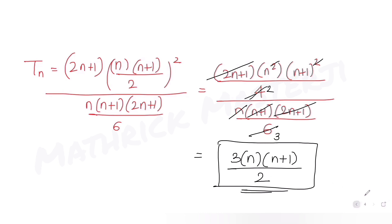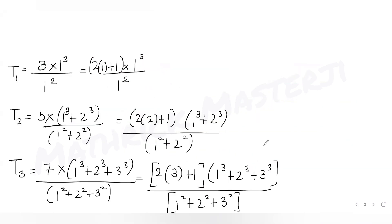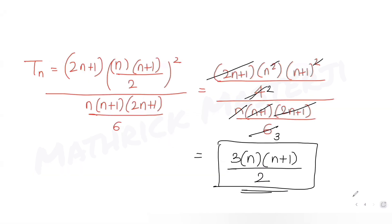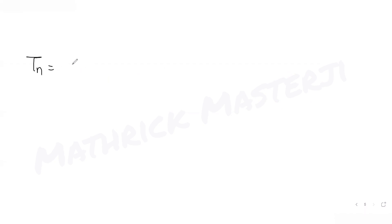Now let's find the sum of all the expressions up to 10 terms. We have the nth term as 3n(n+1)/2.